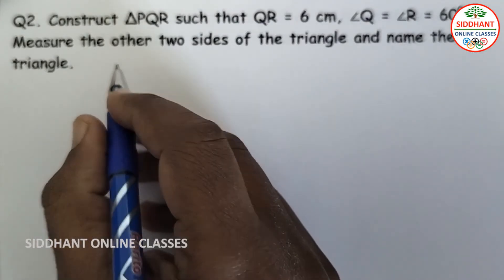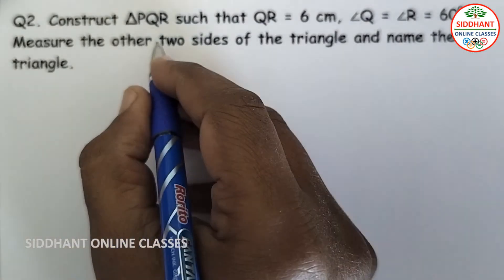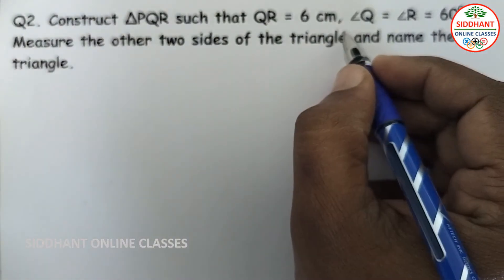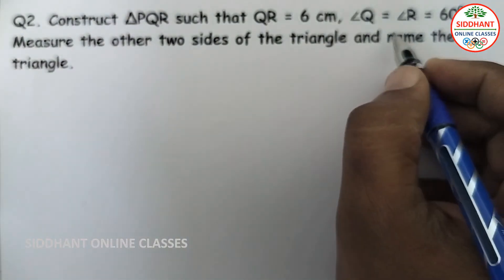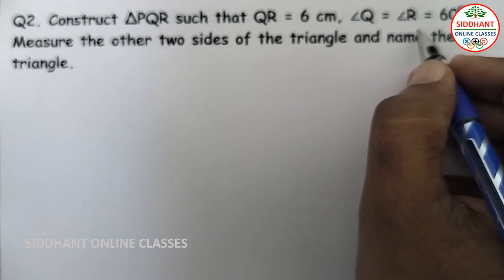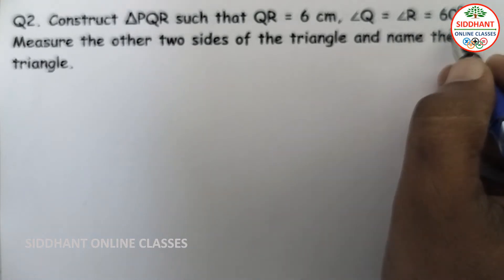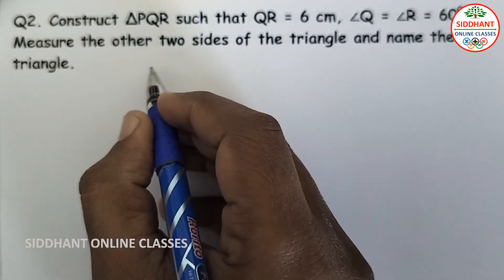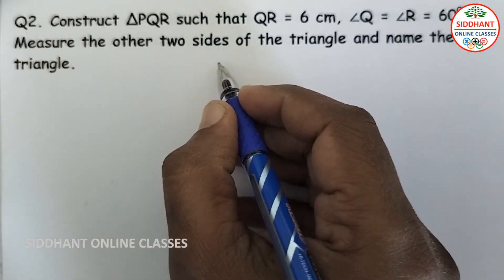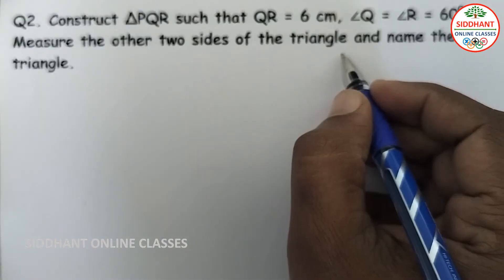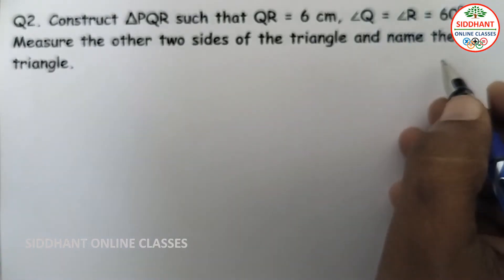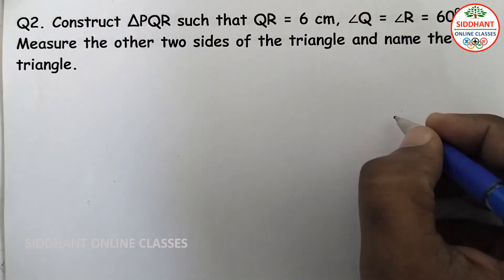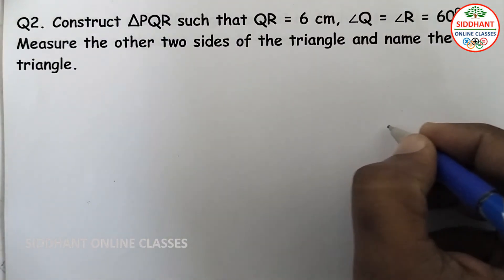Question number 2. Construct triangle PQR such that QR equals 6 centimeters and angle Q equals angle R equals 60 degrees. Measure the other two sides of the triangle and name the triangle.